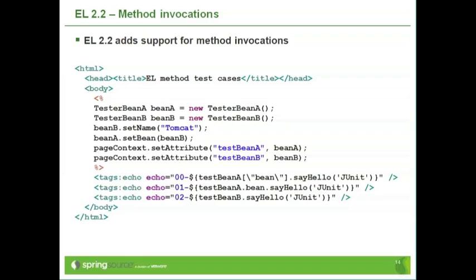There were ways of fudging this with prior versions of the expression language, but in EL 2.2 you can actually invoke methods directly. In this little example JSP, we've created a couple of beans, set a property on each of those beans, and put those beans in the page context. We then use an echo tag — which just echoes the output to the JSP page — to access those beans and call methods on bean B in various different ways.